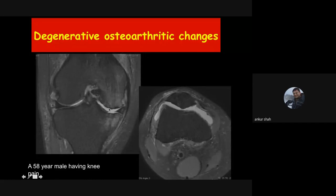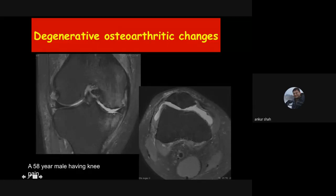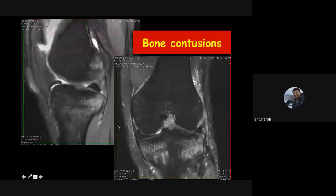Degenerative osteoarthritis changes on MRI show lateral femoral condyle cartilage present but complete loss of cartilage at the medial femoral condyle. The lateral tibial and medial tibial cartilage are also lost, with subchondral bone marrow edematous changes — the classic appearance of degenerative osteoarthritis.